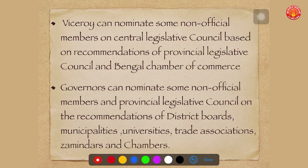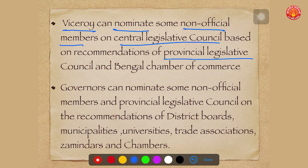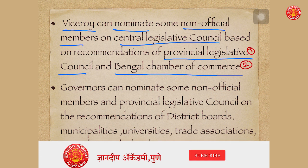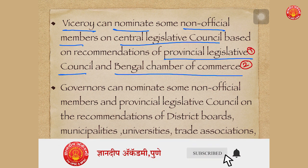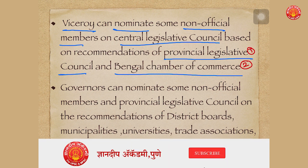Another important provision was that the Viceroy was given the right to nominate some non-official members to the Central Legislative Council based on recommendations of provincial legislative councils and the Bengal Chamber of Commerce. This meant that provincial legislative councils and the Bengal Chamber of Commerce were given representation on the Central Legislative Council through the nomination of non-official members by the Viceroy.